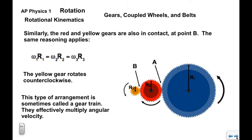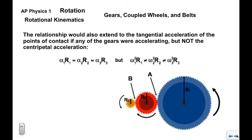The yellow gear is also in contact with the red gear at point B. The same reasoning applies: ω₂r₂ = ω₃r₃, and the yellow gear rotates back counterclockwise. This arrangement is called a gear train — it multiplies angular velocity based on the ratios of the radii. The relationship also extends to tangential acceleration if the gears are accelerating: α₁r₁ = α₂r₂ = α₃r₃. However, it does not apply to centripetal acceleration. Smaller gears in the train have higher angular velocity, which increases the centripetal acceleration of points on their outer edges.